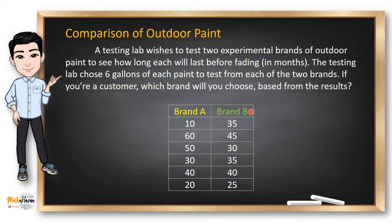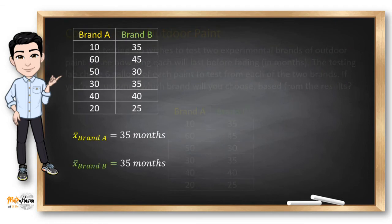In brand B, the first paint that was chosen faded after 35 months, and the second one faded after 45 months. Since 6 gallons were chosen from each of the two brands, we will consider this dataset as samples. Getting the means of the two brands will give us 35 months. Since the means are equal, you might conclude that both brands of paint last equally well.